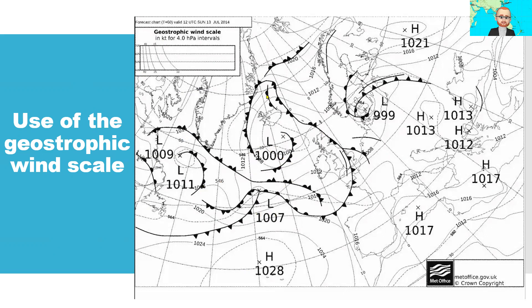Therefore, the wind speed for certain positions has to be calculated. We are calculating the geostrophic wind, and out of this — because 75% of the geostrophic wind is the real wind — we can now calculate the real wind.